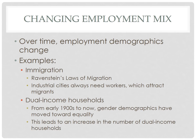Other factors affect cities, including immigration. Review Ravenstein's seven laws of migration, as they're important for AP exam connections. Industrial cities needed workers, and people moved there because, according to Ravenstein, the primary reason people voluntarily move is economics.